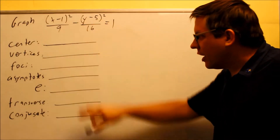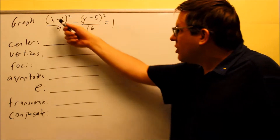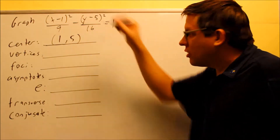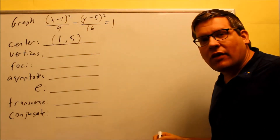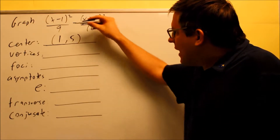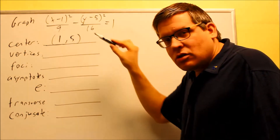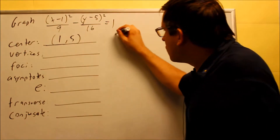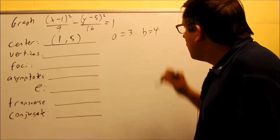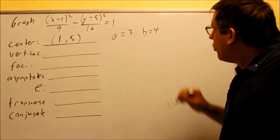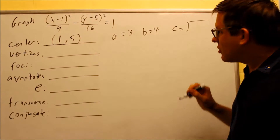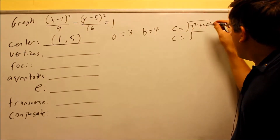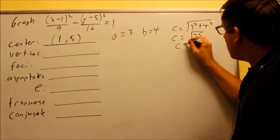Now we have it in the right form and we're ready to answer the questions. First, the center: it's the opposite sign of what you see inside, so it's positive 1 and positive 5 — that's your center. To find a, b, and c: a always comes from the first fraction (the positive one), so a equals 3. b equals 4. For c, we use c equals the square root of a squared plus b squared: root of 9 plus 16 equals root of 25, so c equals 5.